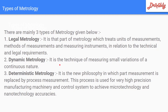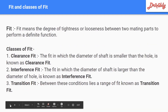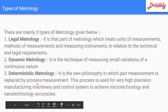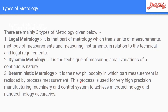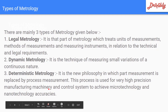Second is dynamic metrology — it is the technique of measuring small variations of a continuous nature. This technique is called dynamic metrology. Third is deterministic metrology, a new philosophy in which part measurements from process measurements are used to replace or guide manufacturing.